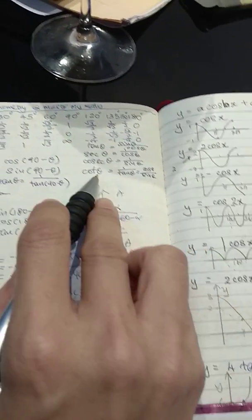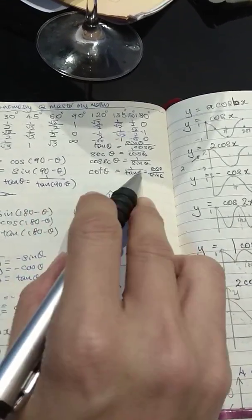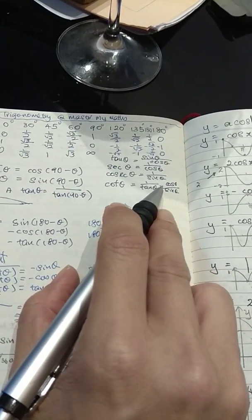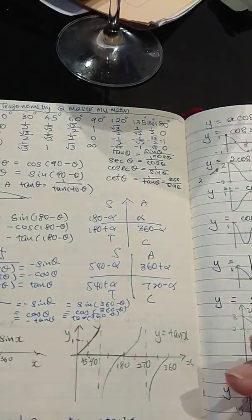So from here, because cotangent is 1 over tangent theta, and since tangent theta is sine over cos, it equals to cos over sine.